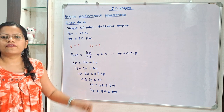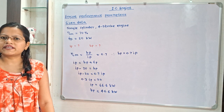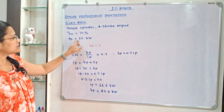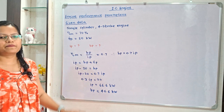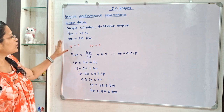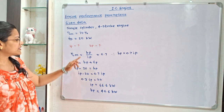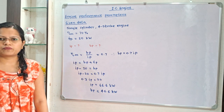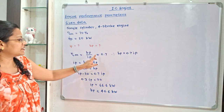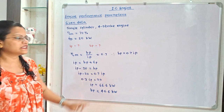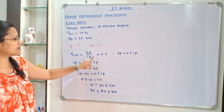New problem: This is a single-cylinder 4-stroke engine. Mechanical efficiency is equal to 70 percent and frictional power is equal to 20 kilowatt. We have to find indicated power and brake power. Mechanical efficiency is the ratio of brake power to indicated power. Writing 70 percent as 0.7, brake power equals 0.7 times indicated power.